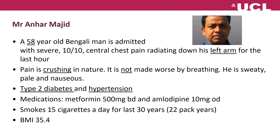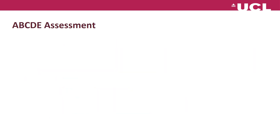Let's pick out the important bits from that history. He's 58, so he's in the right age for atherosclerotic disease. The central chest pain radiates down his left arm, which is particularly significant for pain of cardiac origin — pain down the right arm is very unlikely to be cardiac. The pain is crushing and not made worse by breathing, which goes against pleuritic causes like pulmonary embolism, pneumothorax, pleural effusion, pleurisy, and pneumonia. He has type 2 diabetes, hypertension, smokes 15 cigarettes a day, and has a raised BMI — all risk factors for ischaemic heart disease.